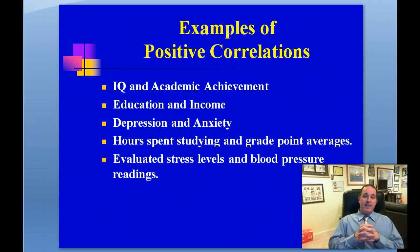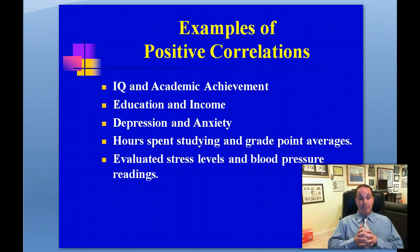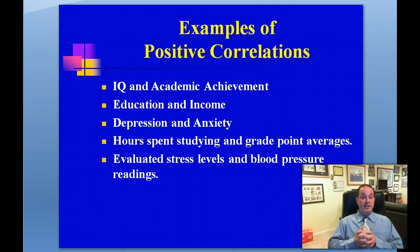Examples of positive correlations include IQ and academic achievement — as IQ scores go up, academic achievement goes up. Education and income — as education levels go up, income goes up. And depression and anxiety — as depression increases, anxiety increases.